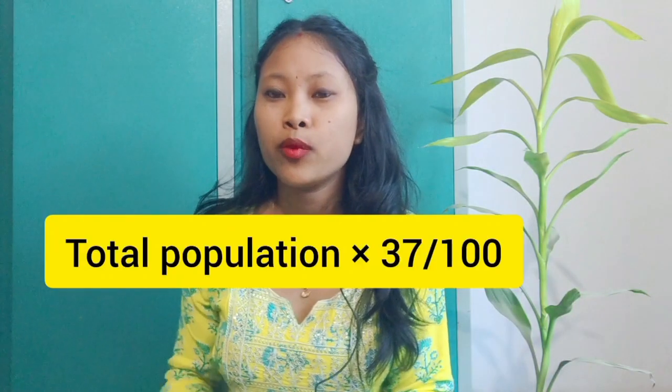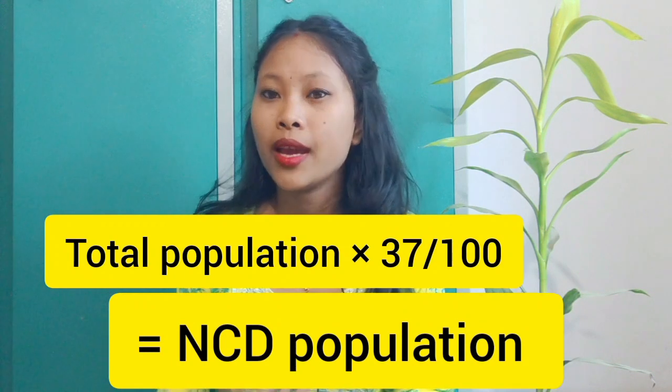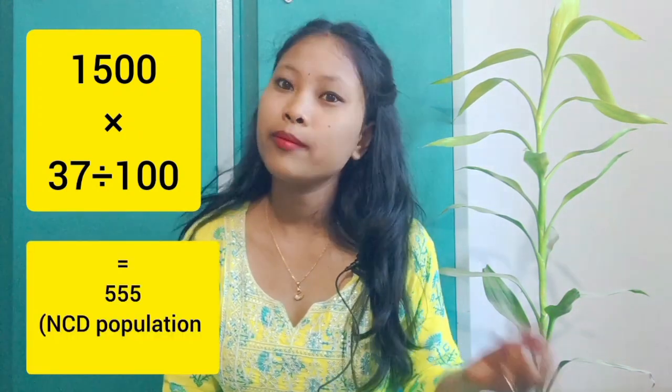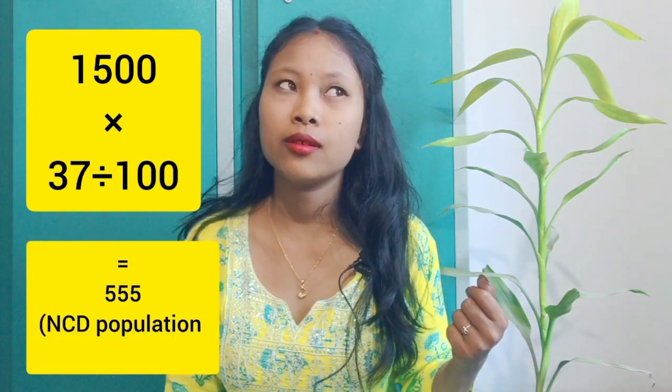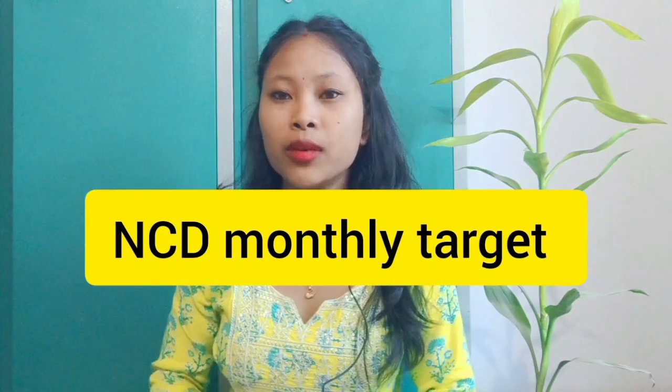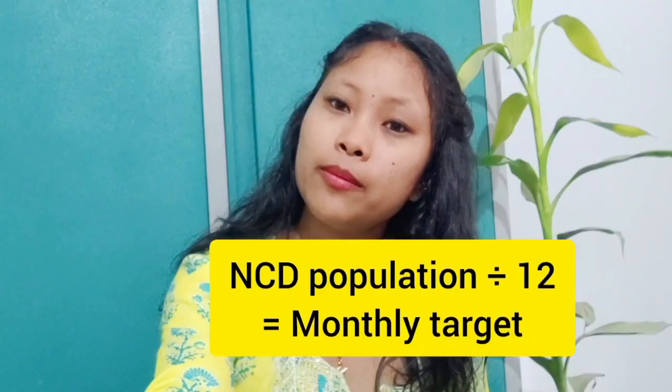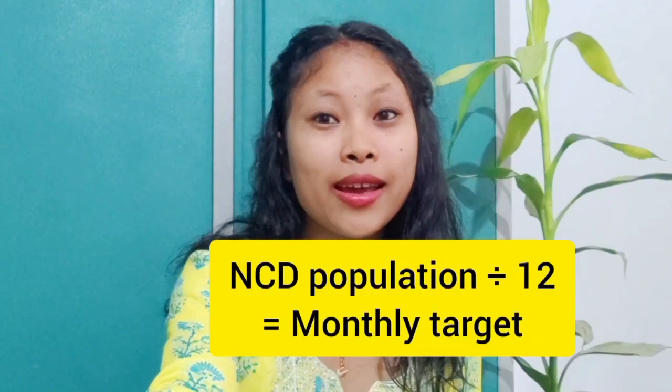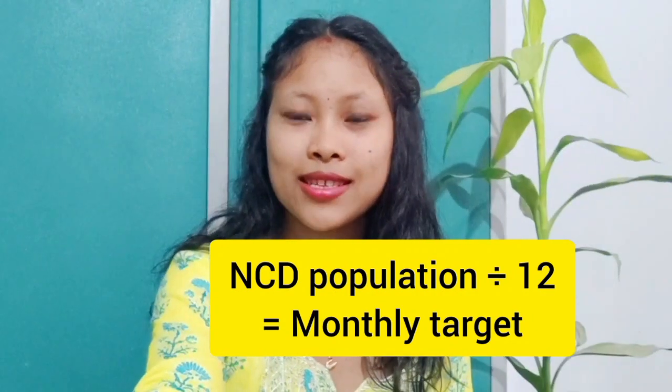Let's see it in an easy way with an example. Suppose I have 1500 total population in my health and wellness center area. I will calculate: 1500 × 37 ÷ 100 = NCD population, which comes to 555. After that, for the monthly target, we divide by 12 — that gives us the monthly target for the health and wellness center.